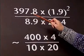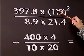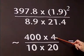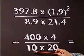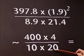397.8 is about 400. 1.9 is about 2, so 2 squared is 4. 8.9 is near enough 10, and 21.4 is rounded up to 20.